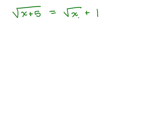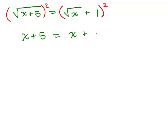Let's do another problem with two radicals. We want to isolate one of the radicals — notice the square root of x plus 5 on the left is already isolated, so we can square both sides to eliminate that radical. On the left, squaring the square root gives x plus 5. On the right, we have a binomial and must use FOIL: square root of x plus 1, times itself. The first term is x, the outer and inner terms combine to give 2 square roots of x, and the last term is 1 squared, which is 1.